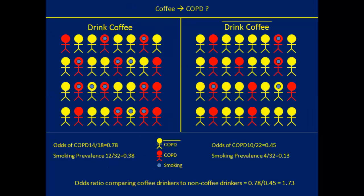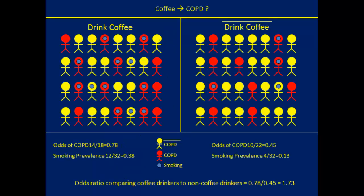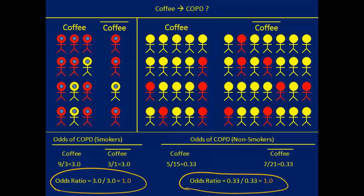Otherwise, we're always going to have more smokers among the coffee drinkers compared to the non-coffee drinkers. And because, according to our idea about reality, smoking is a cause of COPD, we are naturally going to see a higher odds of COPD among the coffee drinkers compared to the non-coffee drinkers in a systematic way. That's exactly what we saw — the odds were 73% higher among the coffee drinkers compared to the non-coffee drinkers. It was only when we took out that variability in smoking by stratifying our analysis that we were able to see the true association between coffee drinking and COPD, which was, in fact, no association.